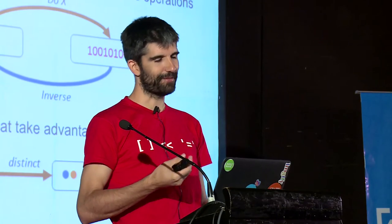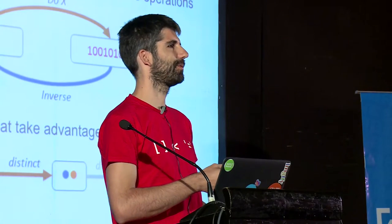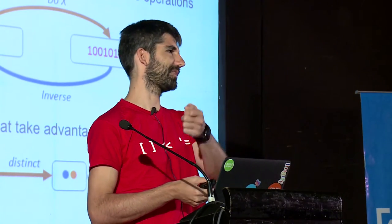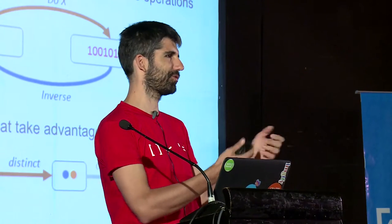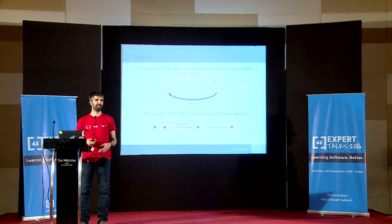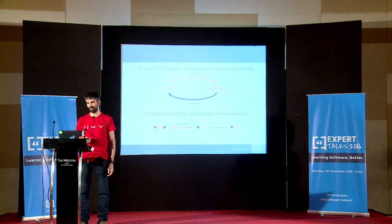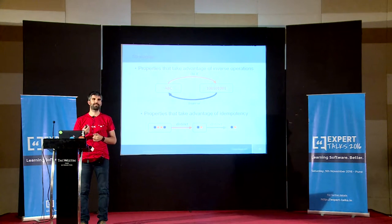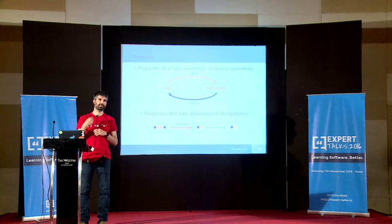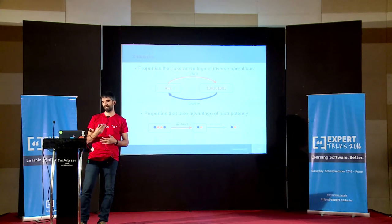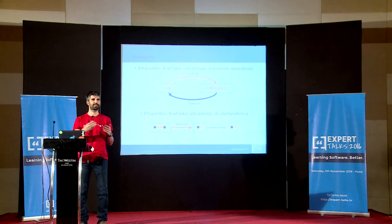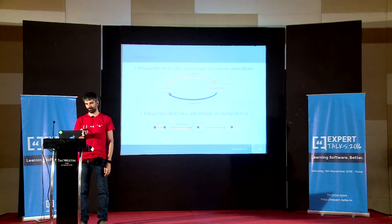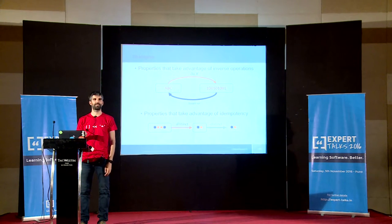Another strategy is inverse. For example, serialize something to JSON and then deserialize it — you should get the original back. That's a property that's easy to test. Another is idempotency: if you sort and then sort again and sort again, however many times you sort it doesn't matter because it's already sorted. So you should see that applying the function more than once doesn't change anything.